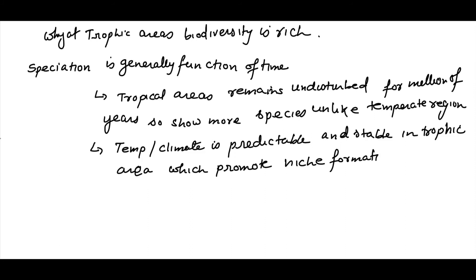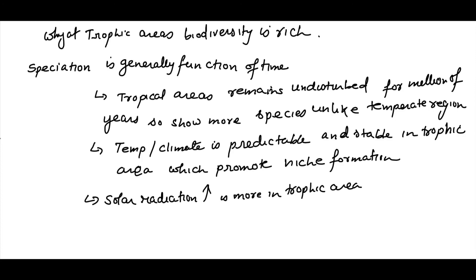Tropical regions are predictable and stable, which promotes niche formation. Because there is more stability, there is also more productivity in this area, which further supports greater biodiversity in tropical regions.